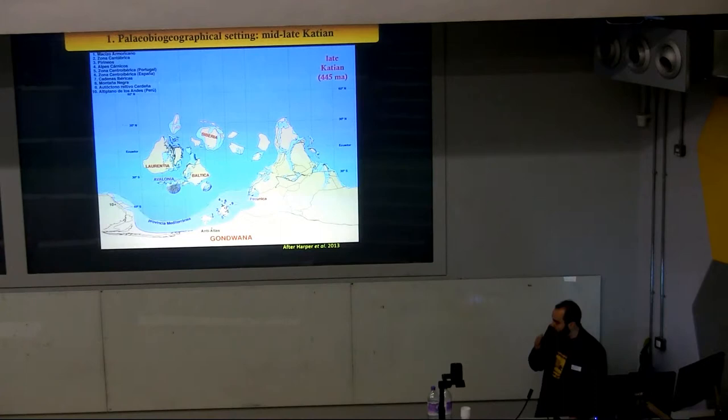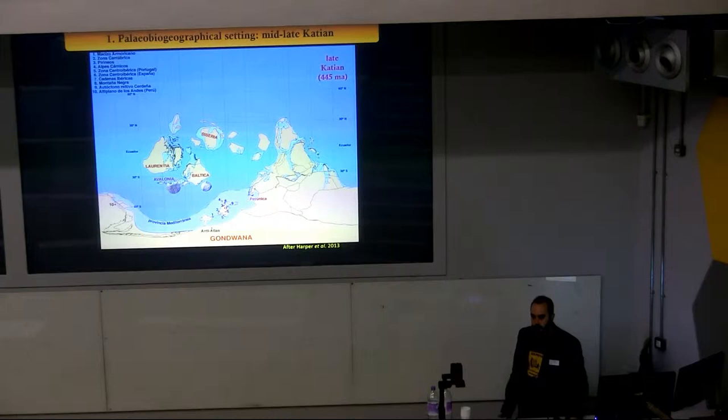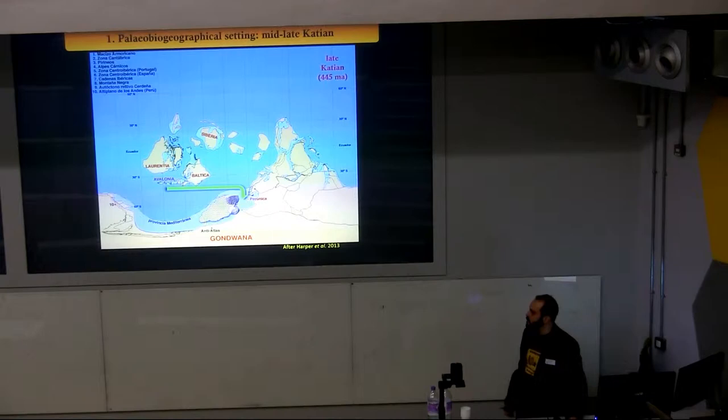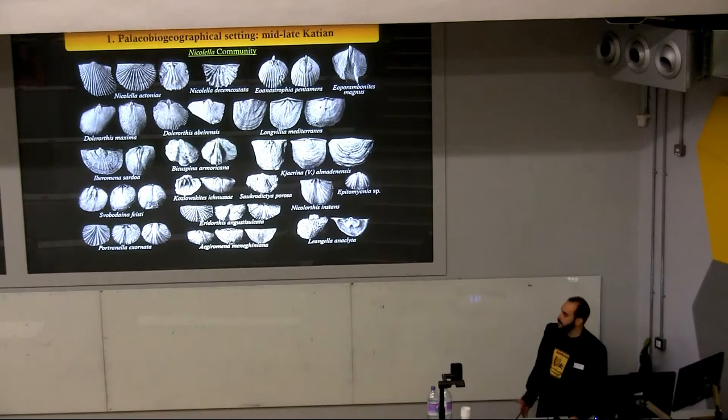A little bit after, during the mid to late Katian, a global warming event, the so-called Boda event, occurred that allowed the precipitation of carbonates in high-latitude and mid-latitude platforms. Taking advantage of these new niches created, several taxa from low-latitude platforms invaded these carbonate platforms, wiping out most of the endemic taxa living there. As a consequence, endemism in the region decreased and diversity in the communities rose.